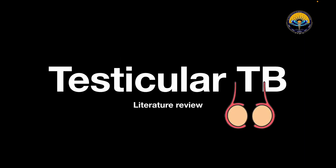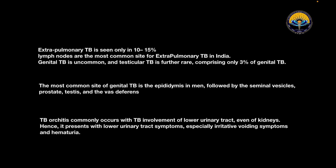Let's talk about testicular TB literature review. Extrapulmonary TB is seen in only 10–15% of cases. Lymph nodes are the most common site for extrapulmonary TB in India. Genital TB is uncommon, and testicular TB is further rare, comprising only 3% of genital TB. The most common site of genital TB is the epididymis, followed by the seminal vesicles, prostate, testis, and the vas deferens.